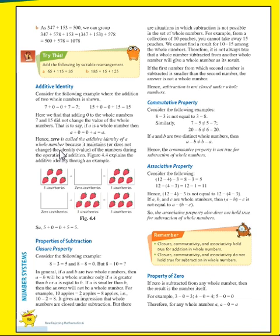Now see figure 4.4, which explains additive identity through an example. Here we have strawberries. In this box we have five strawberries, plus zero strawberries — meaning no strawberry is added — so that equals five strawberries only.